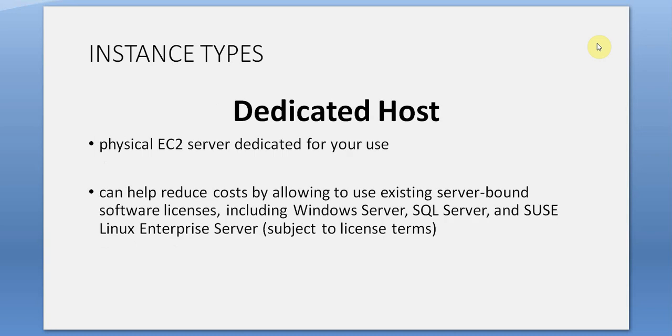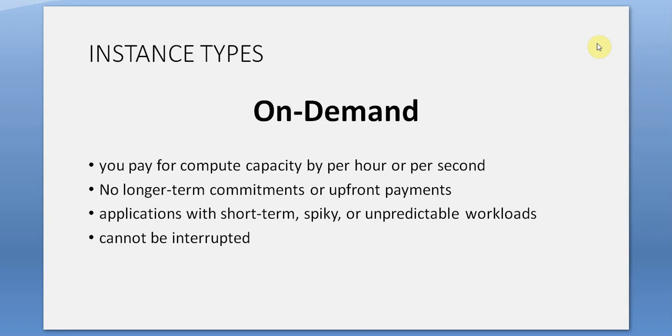Dedicated Host: a physical EC2 server dedicated for your use. Can help reduce costs by allowing use of existing server-bound software licenses, including Windows Server, SQL Server, and Linux Enterprise Server, subject to license terms. On-Demand: you pay for compute capacity per hour or per second with no long-term commitments or upfront payments. Best for short-term, spiky, or unpredictable workloads that cannot be interrupted.